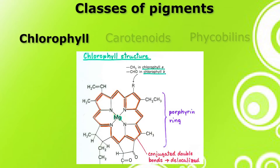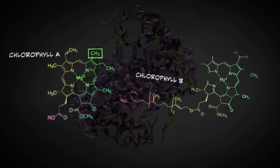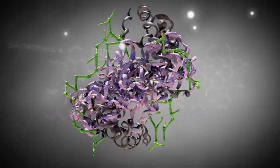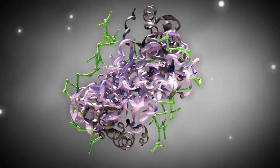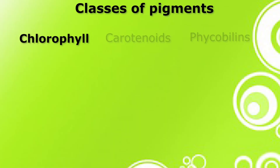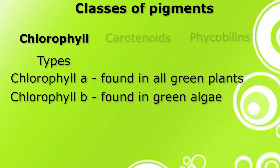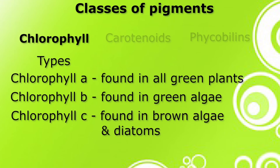The structure of chlorophyll contains a porphyrin ring which allows the free movement of electrons. Due to this movement, the ring has the potential to gain or lose electrons easily — this is the fundamental process by which chlorophyll captures the energy of sunlight. There are several kinds of chlorophyll: the most important being chlorophyll A, found in all green plants; chlorophyll B, found only in green algae; and chlorophyll C, found in brown algae and diatoms.